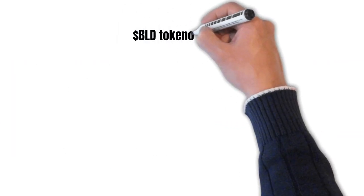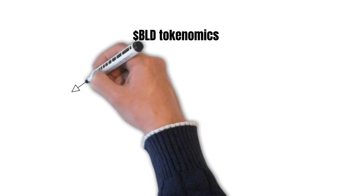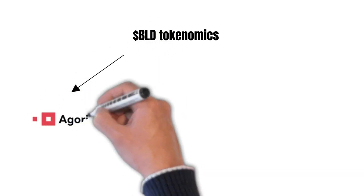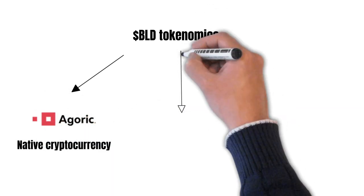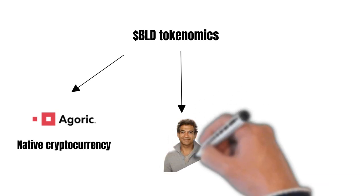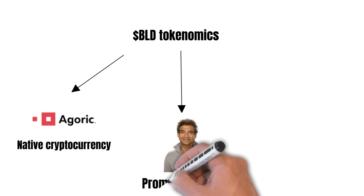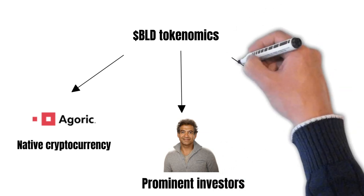Let us continue with the tokenomics of BLD. BLD is the native cryptocurrency of the whole Agoric ecosystem. BLD's public sale took place on CoinList in late 2021. And man, there are several well-known investors like Naval Ravikant who decided to add BLD to their portfolios. But, what is BLD used for?